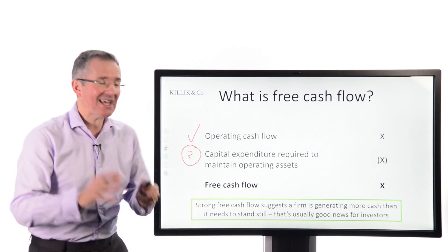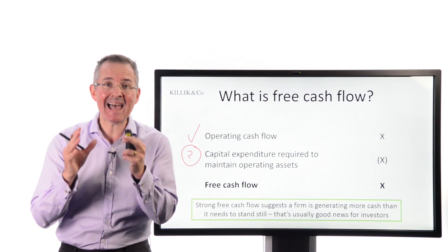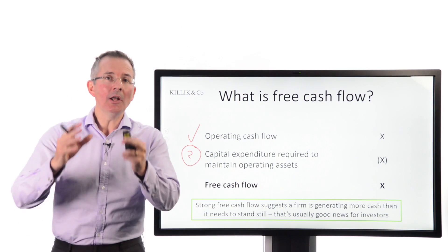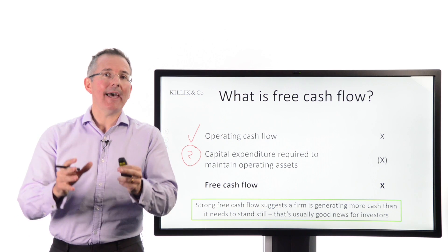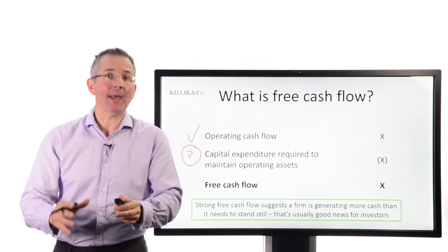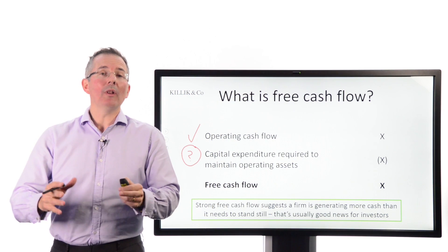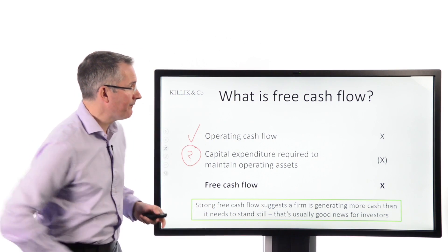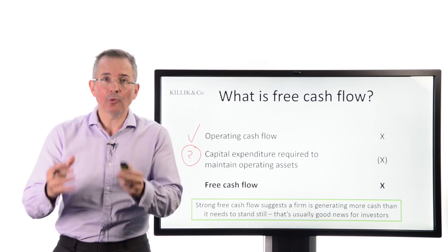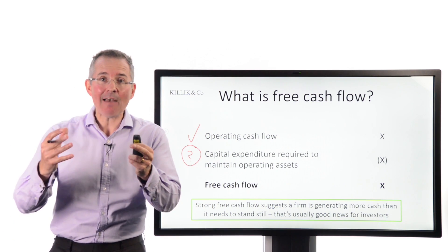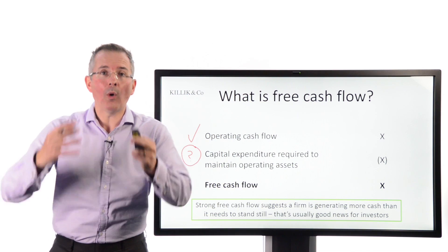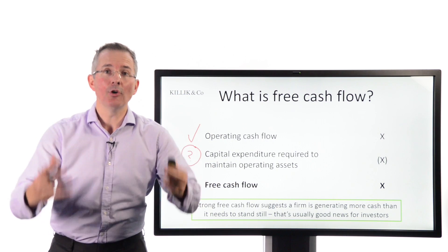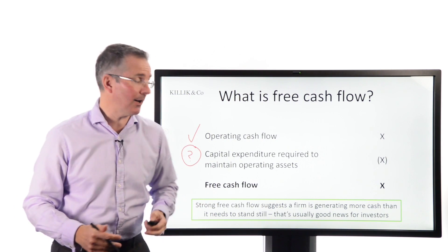What we then do is deduct — and this is where you need a bit of judgment, because opinion divides on exactly what you deduct. What you're trying to do is take off the capital expenditure required to maintain, not expand, but maintain the business's current operations. There are analysts who will use the depreciation expense as a kind of proxy for that. Others have their own way of estimating it, but the point is you've got to make a deduction to get to free cash flow.